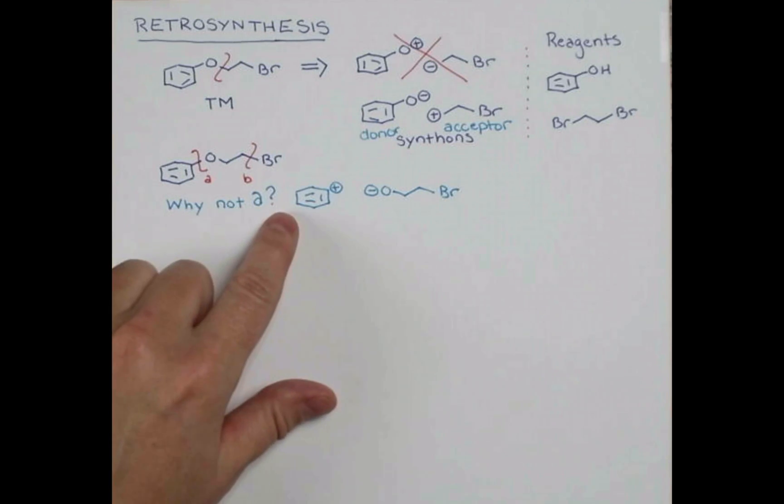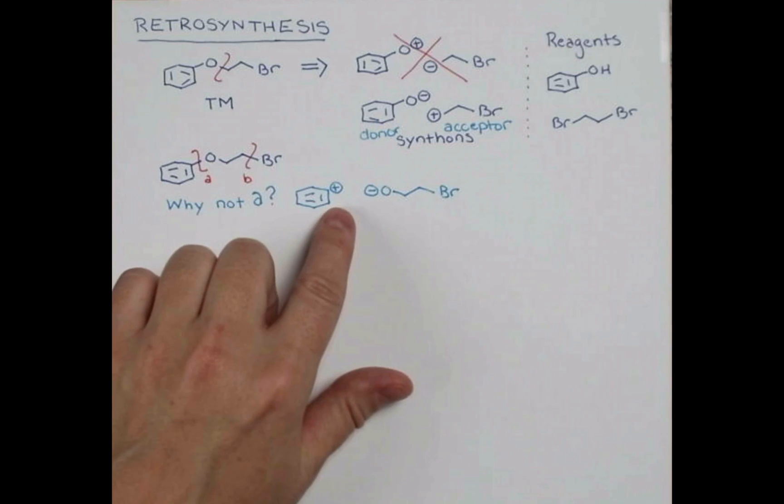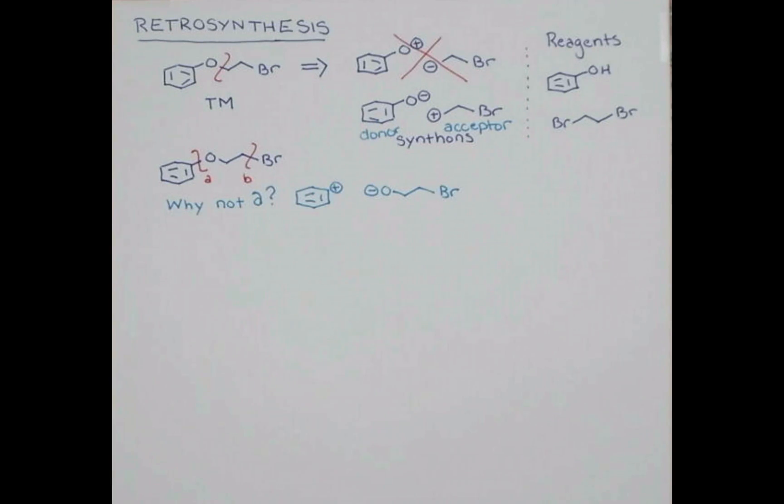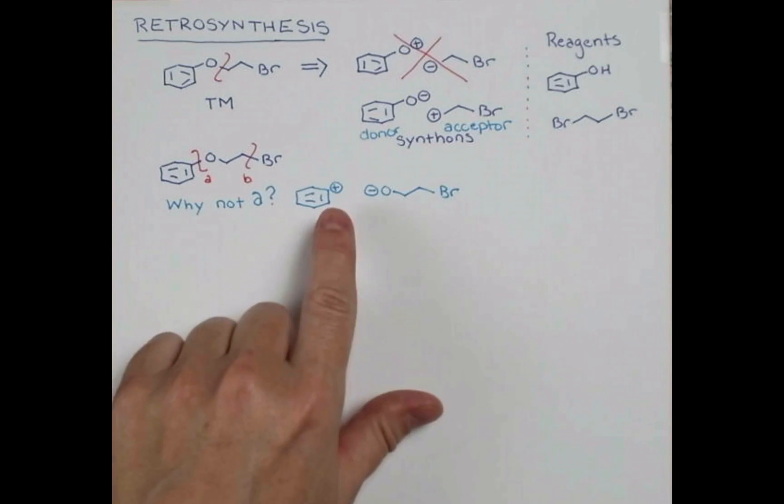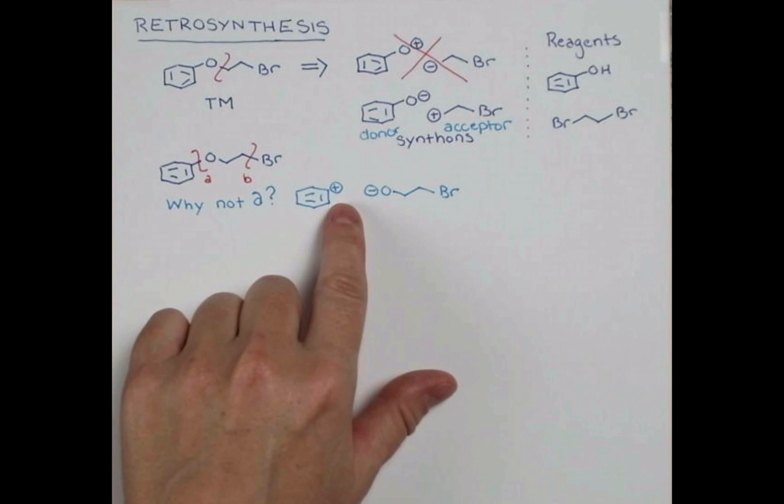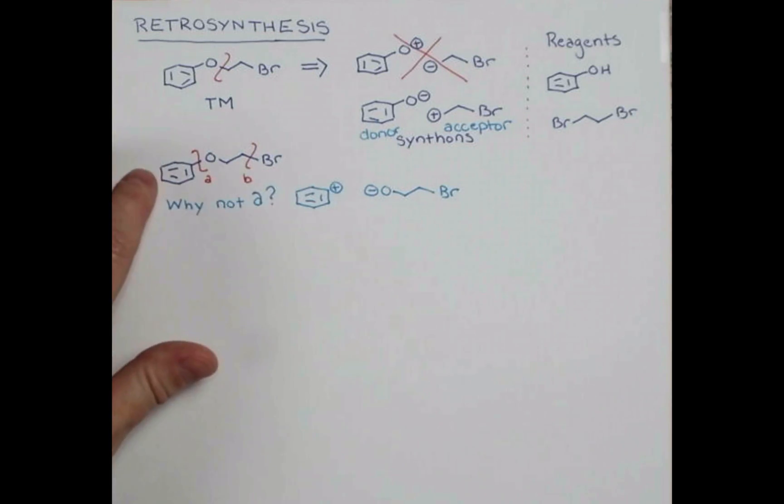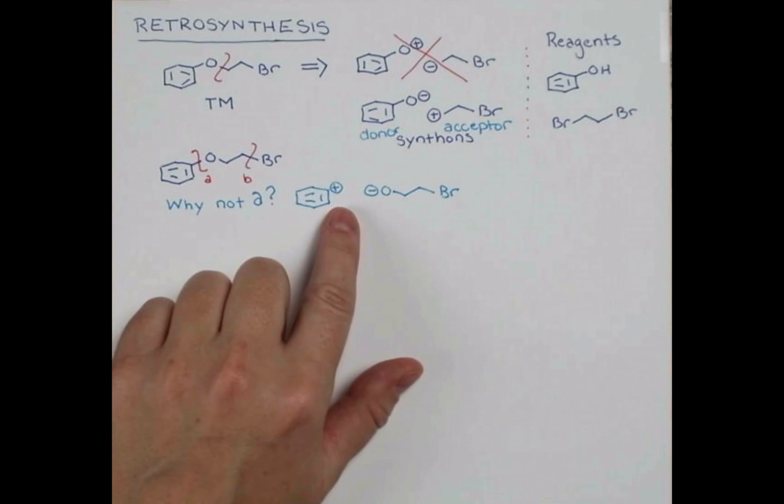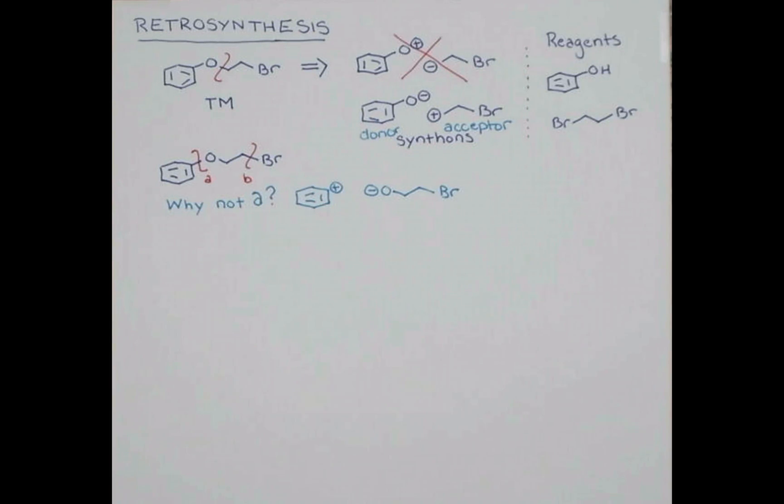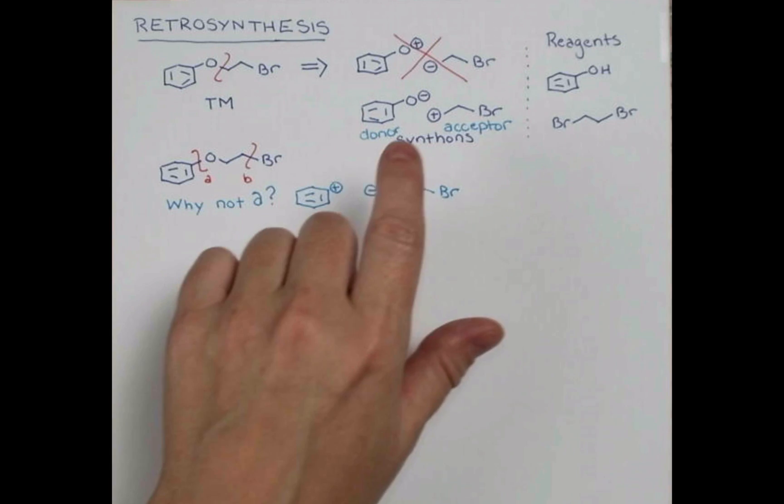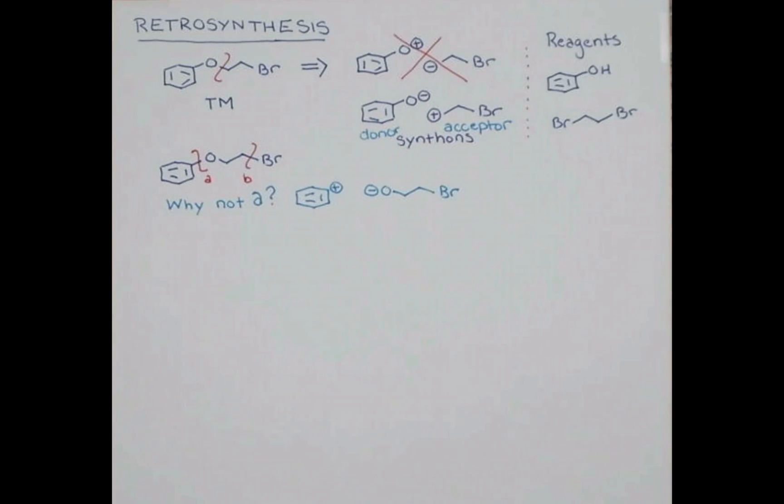Now, if we had electron withdrawing groups on here, we could think of maybe a nucleophilic aromatic substitution involving a positively charged area on an aromatic ring. But for this unsubstituted ring, that doesn't really apply. So there's no reason we'd do nucleophilic aromatic substitution. Doing a diazonium reaction is not as reliable as the Williamson etherification. So that's why A would not be our best disconnection.